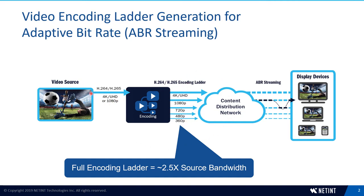The concept is you take that high definition video source and then prepare that same content from the original resolution down to different resolutions and different bitrates, so that the adaptive bitrate streaming servers can select which resolution is the best match for the network conditions and device capabilities. The key point is that the bandwidth required to distribute this encoding ladder through the network is typically about 2.5x what the original source bandwidth would be.